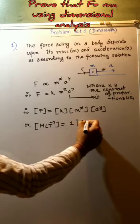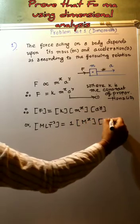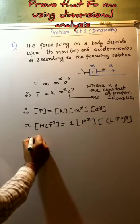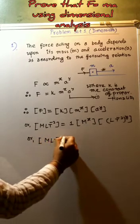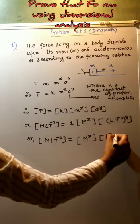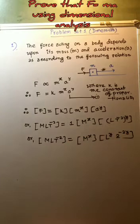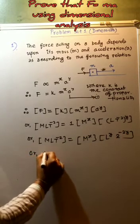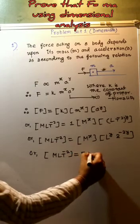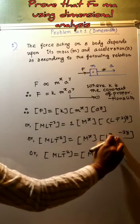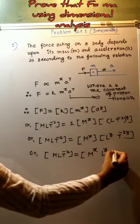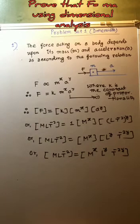Mass has the dimension M to the power X, and acceleration has the dimension L·T to the power minus 2, whole to the power Y. So we get M·L·T to the power minus 2 equals M to the power X and L to the power Y and T to the power minus 2Y. Simplifying, we get M to the power X, L to the power Y, and T to the power minus 2Y.